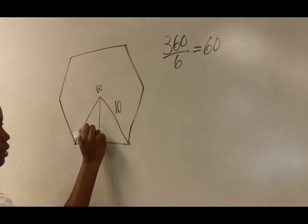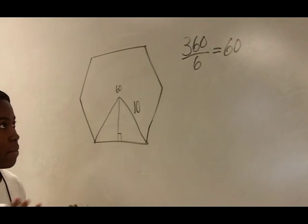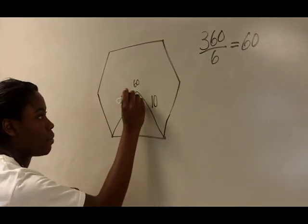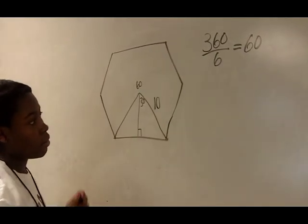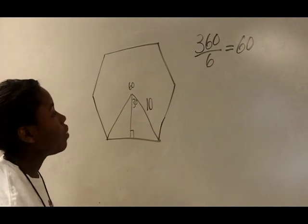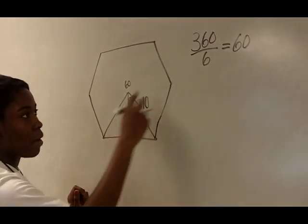Then you want to bisect it to have two right triangles so you can do trig and Pythagorean theorem. So this is going to be 30, and then we're going to do trig to find out the apothem.